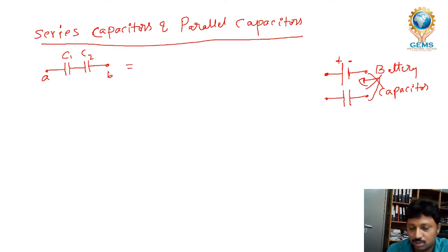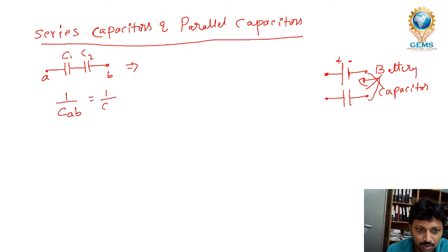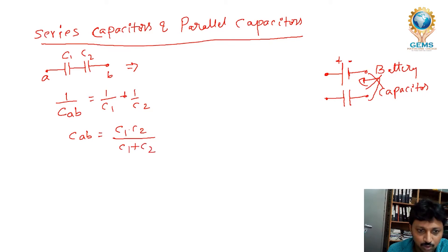Since two capacitors are in series, you should not write C1 plus C2 — that is wrong. In series capacitors, CAB behaves like parallel resistors: 1 by CAB is equal to 1 by C1 plus 1 by C2.